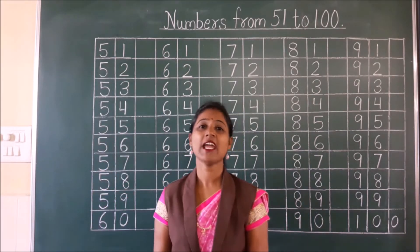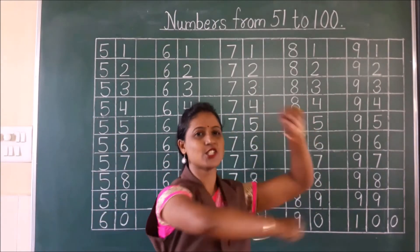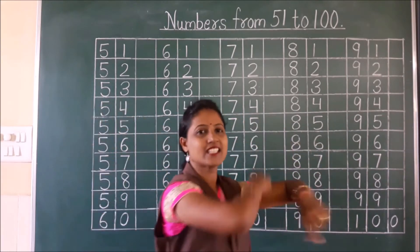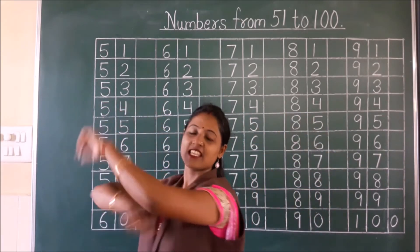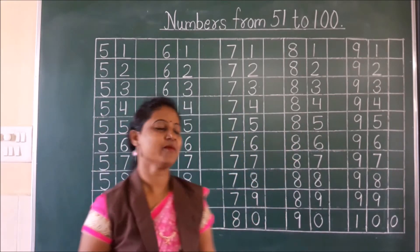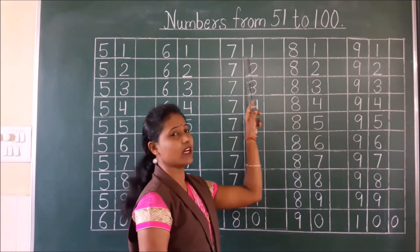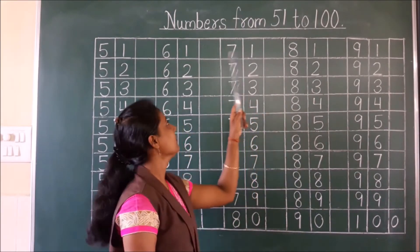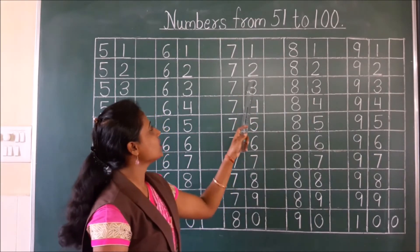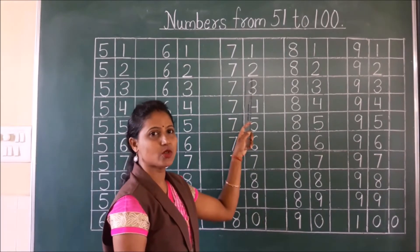Now let's do rolly polly and count. 61, 62, 63, 64, 65, 66, 67, 68, 69, 70. After 70: 71, 72.